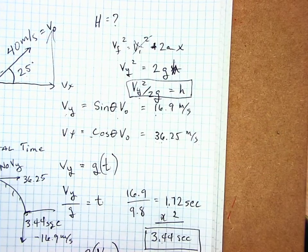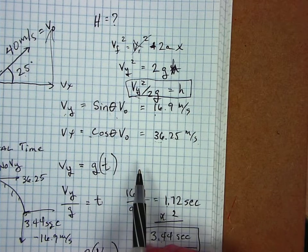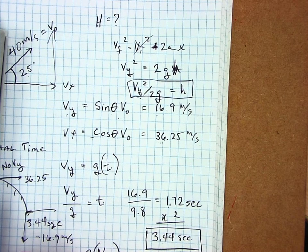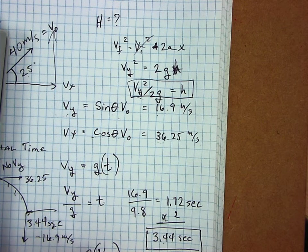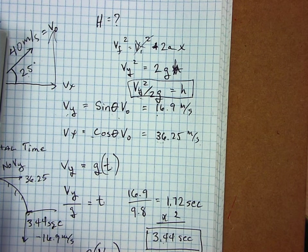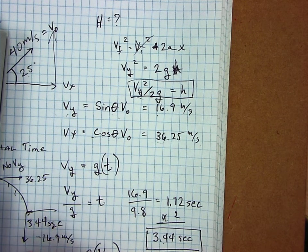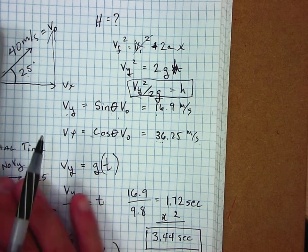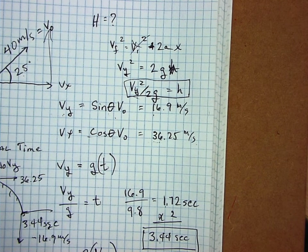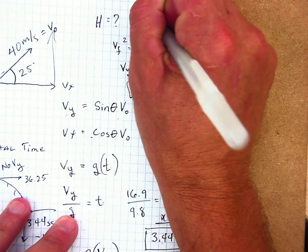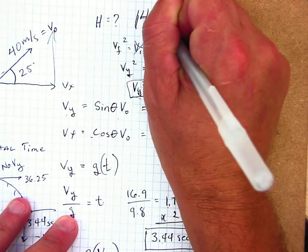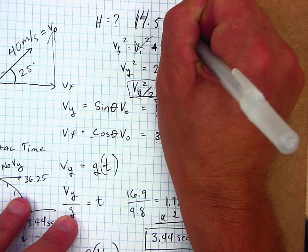So following that equation, I've already got the v_y of 16.9. Square it. Divided by 2 and then divided by 9.8 is 14.57. This will go 14.57 meters in the air.